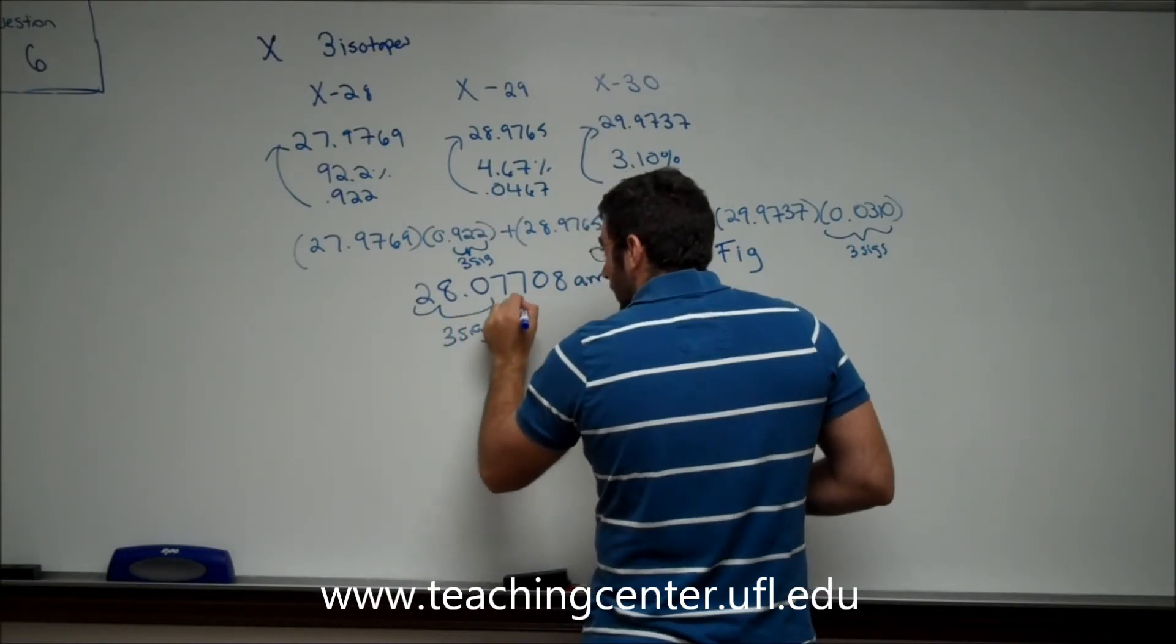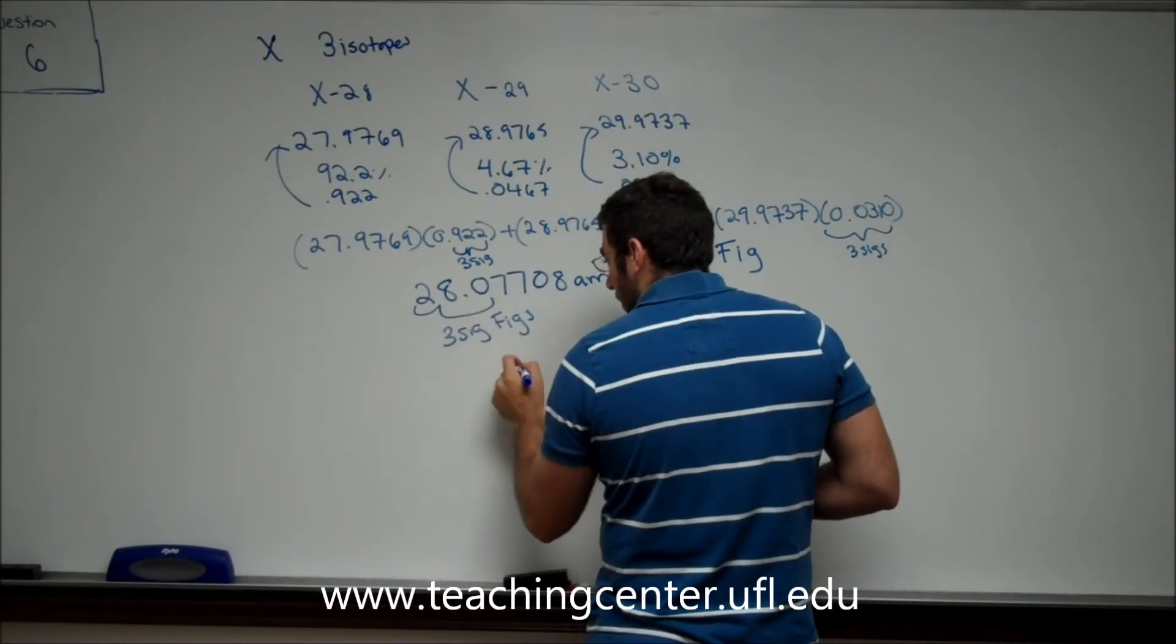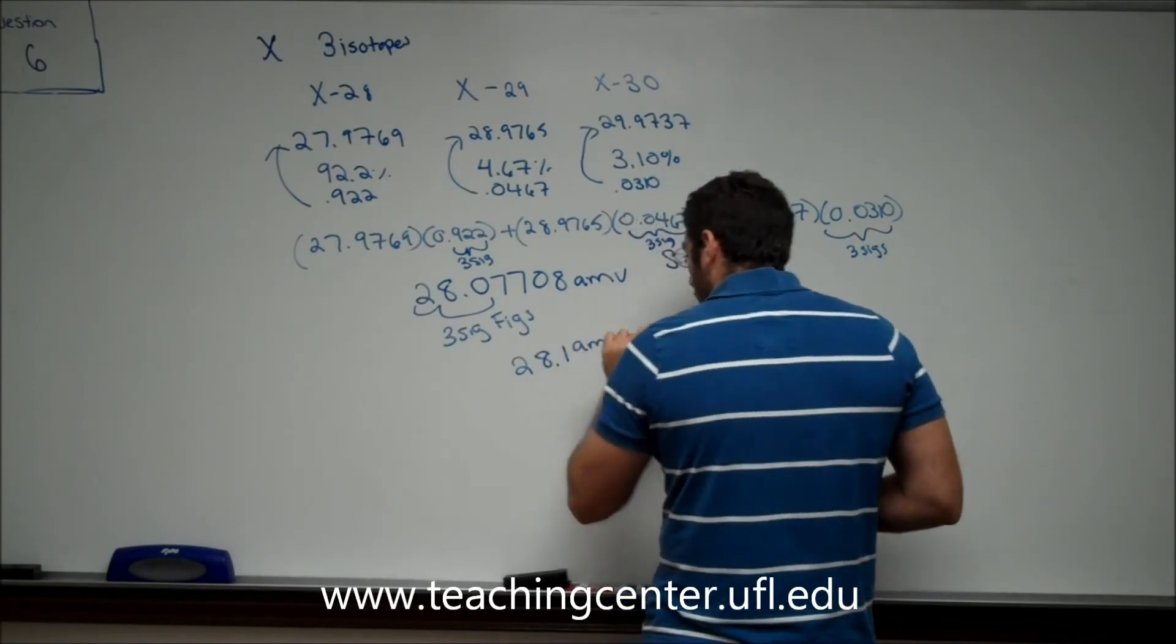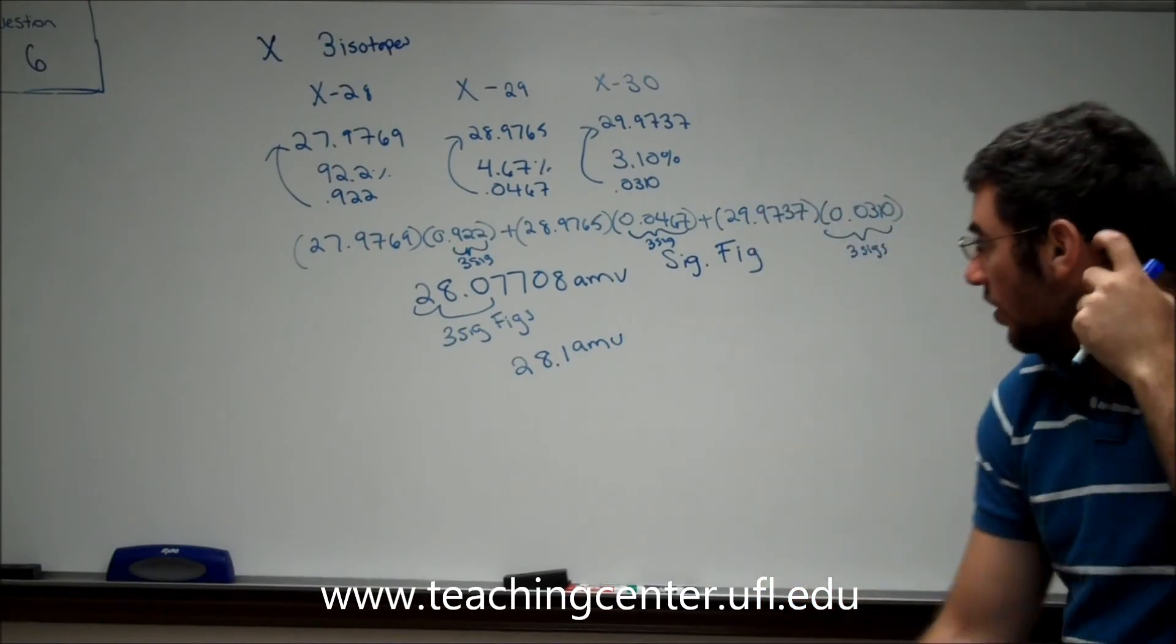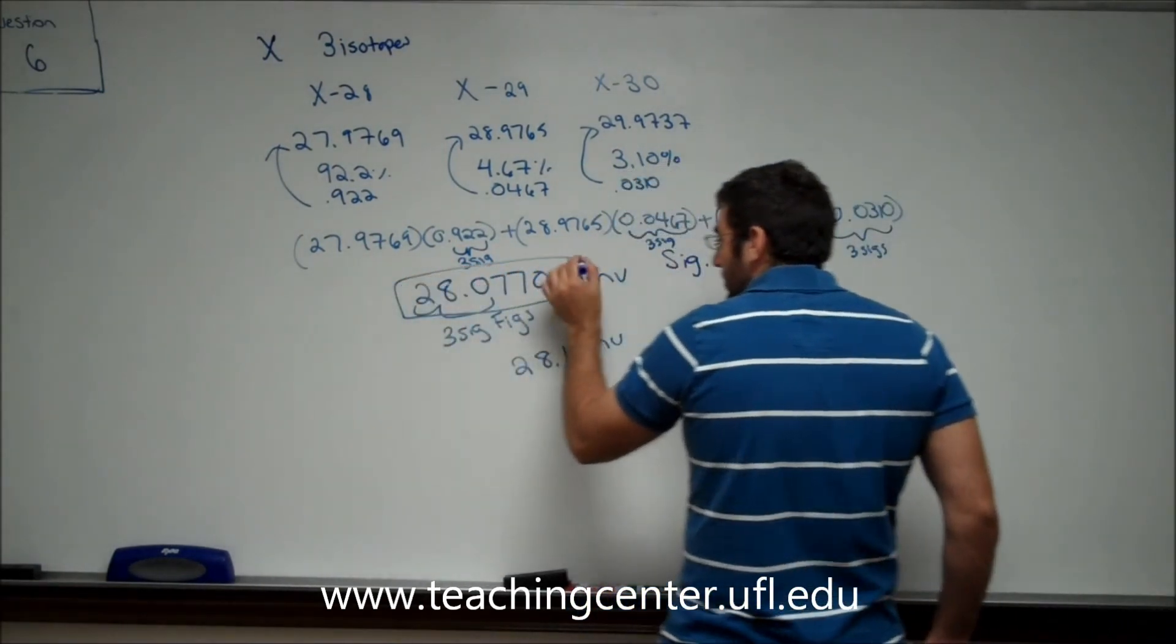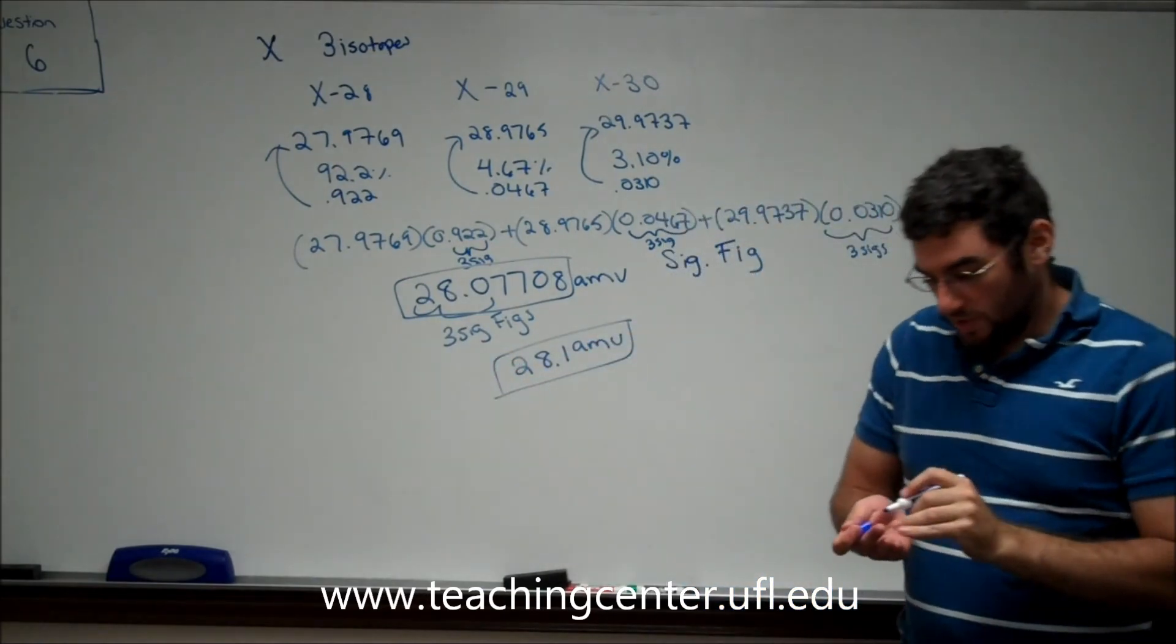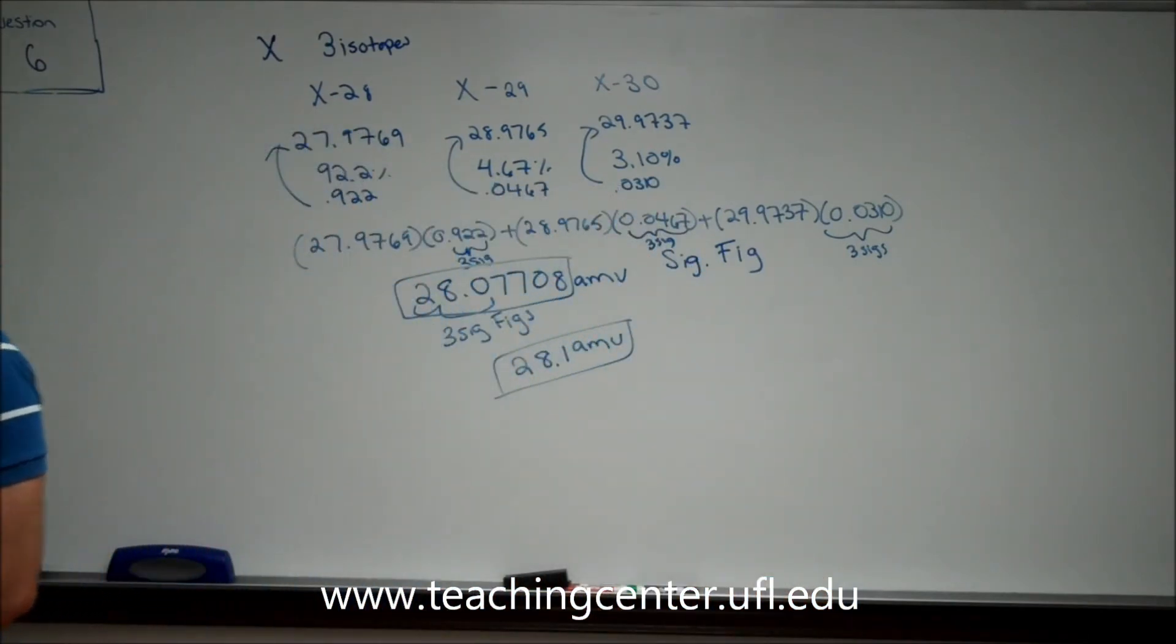So this 7 makes the 0 round up to a 1. So the real answer is 28.1 AMU. Be very careful when you're doing a question like this. Because yes, this is the right calculation, but your professor is looking for significant figures once again, giving you 28.1 atomic mass units.